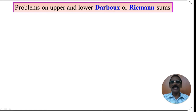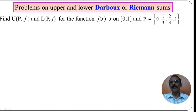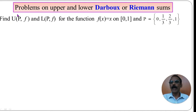We will work on problems involving upper and lower Riemann sums, also known as dot box sums. We need to find U(P,F) and L(P,F) for the function f(x) = x. That is, we have to find the upper Riemann sum and lower Riemann sum for the given function f(x) = x, defined on the closed interval [0,1] with respect to a given partition P.